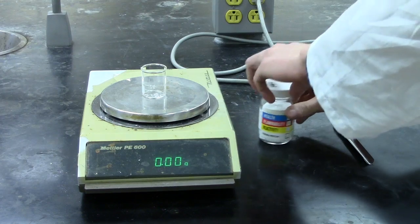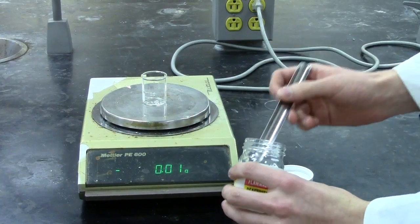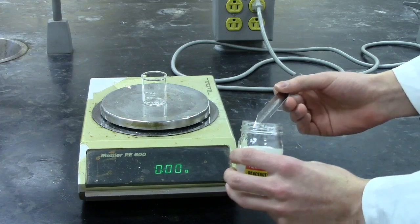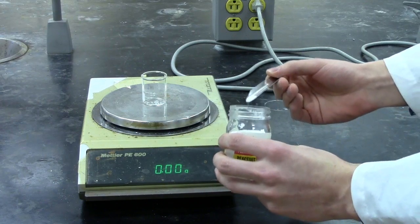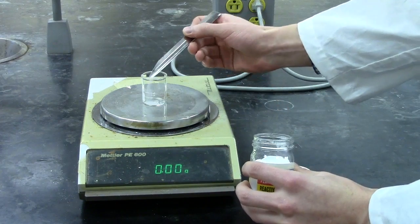So with your vessel loaded onto the top loading balance, you can now measure out the mass of your given substance. Let's say you're aiming for roughly one gram.